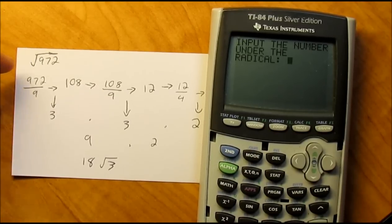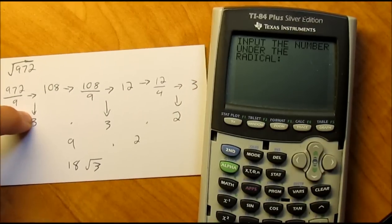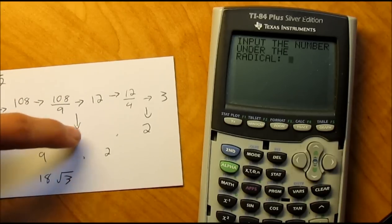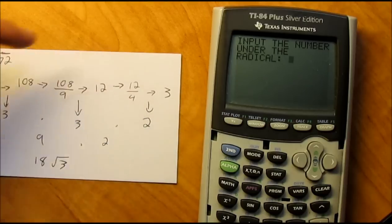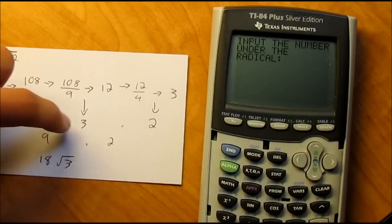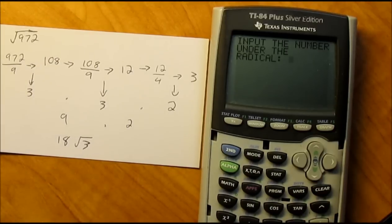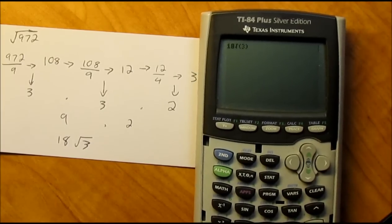So 972 divided by 9 is 108. And because 9 is a perfect square, you pull a 3 out. Then 108 divided by 9 is 12 — so 9 again, you pull another 3 out. And 12 divided by 4, which is another perfect square, is 3, so you pull a 2 out. So 3 times 3 is 9, times 2 is 18 — so 18 square roots of 3 should be the answer. We type in 972, hit enter, and it calculates 18 square roots of 3.